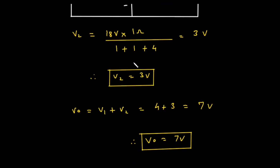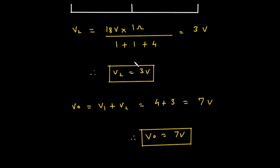Excellent! We found V2. We are now at the final and easiest step. The superposition theorem tells us that V0 is simply the sum of the individual voltages: V0 = V1 + V2. We found V1 = 4 volts and V2 = 3 volts. So V0 = 4 + 3 = 7 volts.